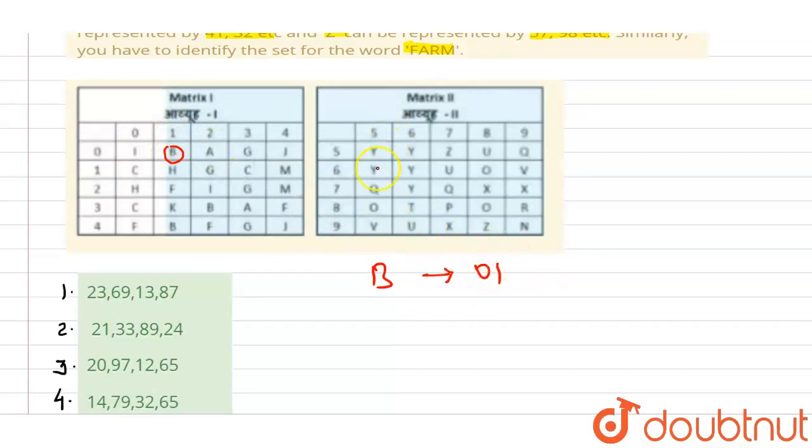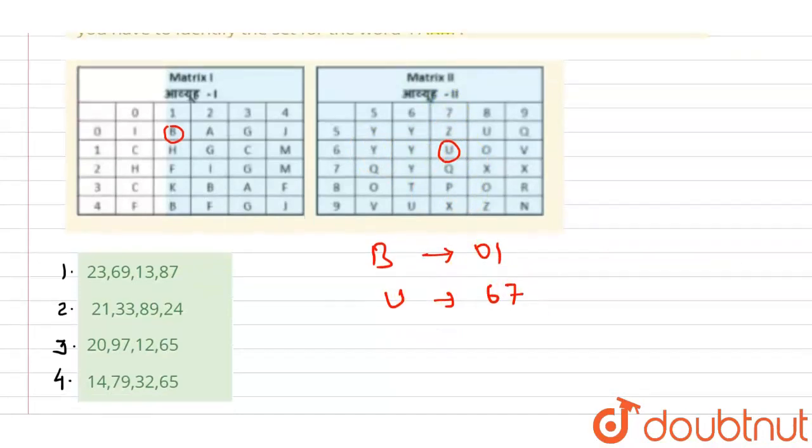Similarly, if I take any letter here, like U, how will I represent U? First by row, which row is it? 6. And then which column? 7. So 67 is the code of U. Now I will find FARM's code by checking the options.